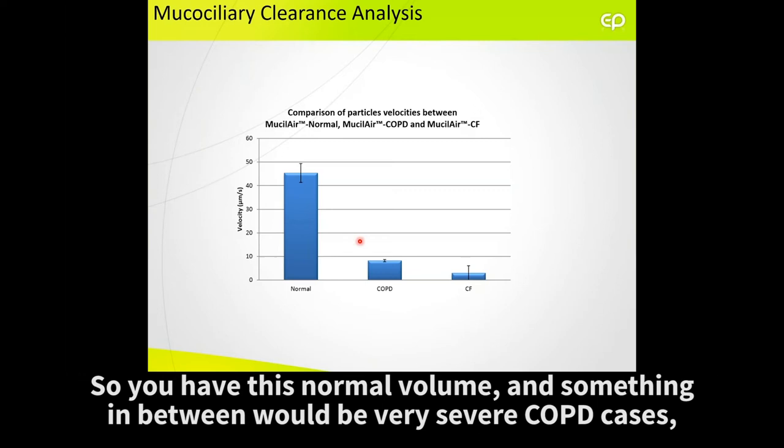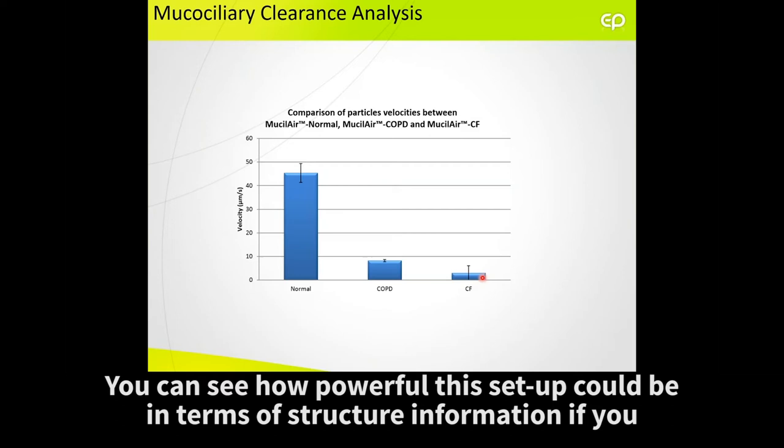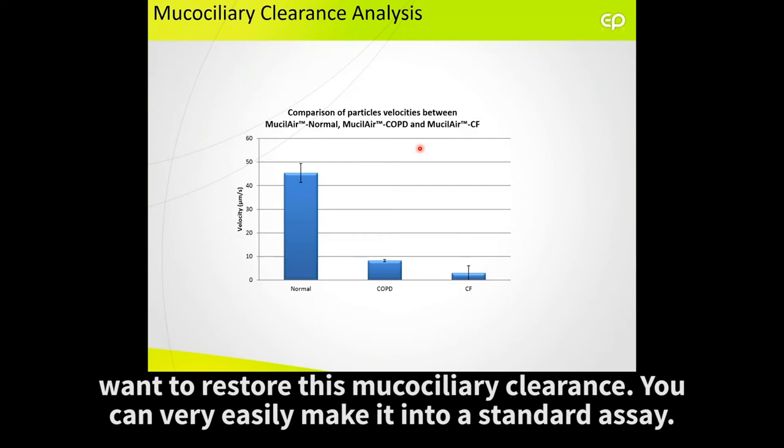So you have this normal value, and something in between would be very severe COPD cases, as you can see here. You could see how powerful this method could be in terms of extracting information. If you want to restore this mucociliary clearance, you can very easily make it a standard assay.